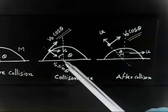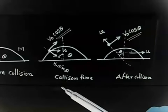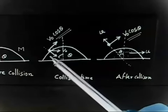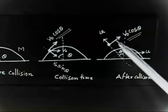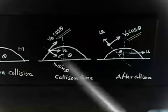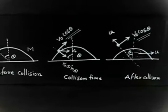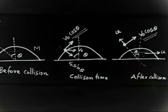We can write an equation in the radial direction using the coefficient of restitution. But first, let me ask: why have I assumed that the velocity in the tangential direction remains constant while the velocity in the normal direction has changed? Think about this and give me the answer.